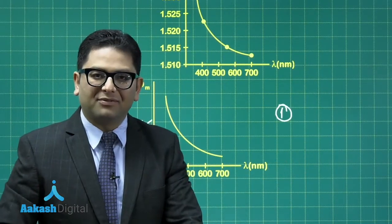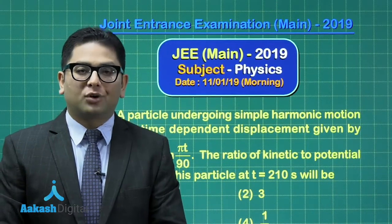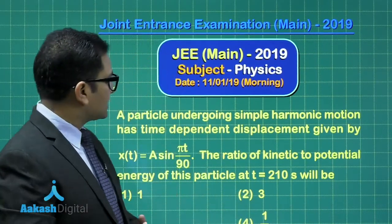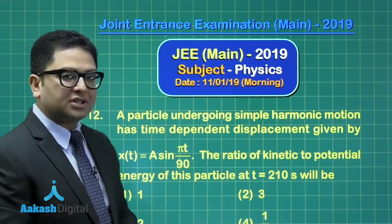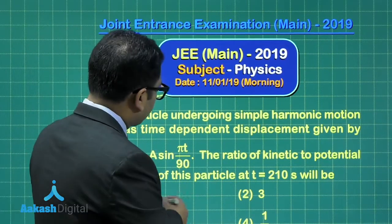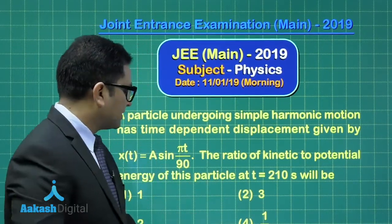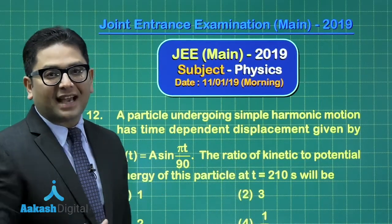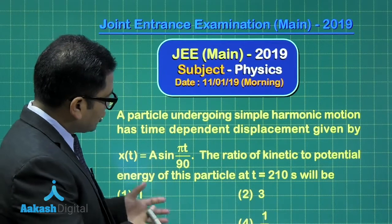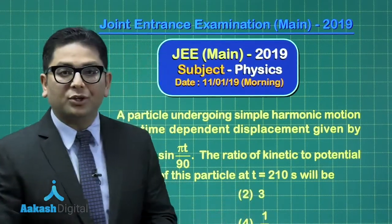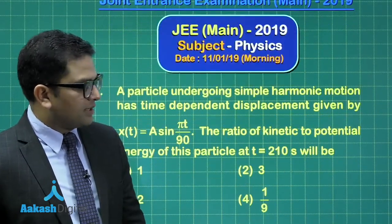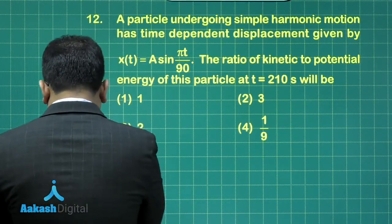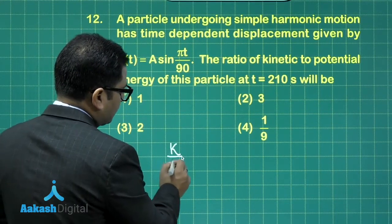Time to move to question number 12, which has been put from the topic of simple harmonic motion. A particle undergoing SHM has the time-dependent displacement given by x = A sin(πt/90), which indicates the particle started from the mean position. We need to calculate the ratio of kinetic to potential energy at a given time.